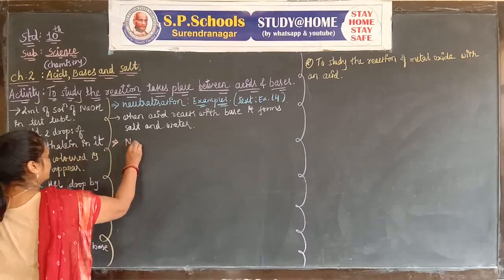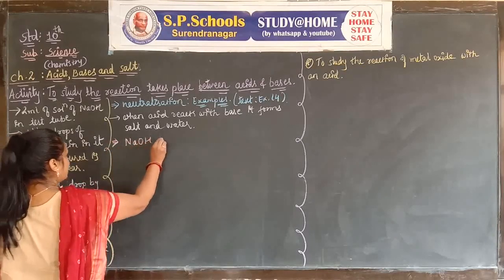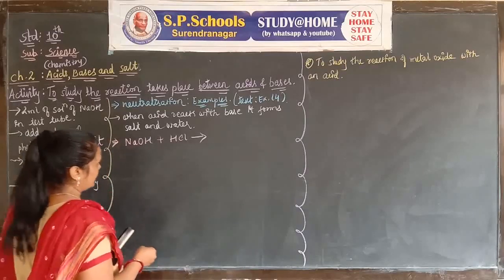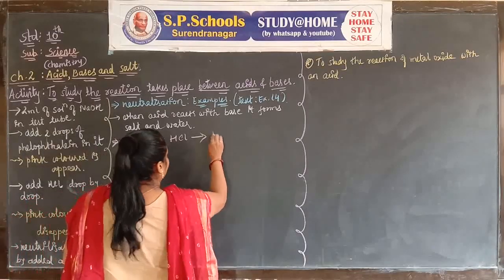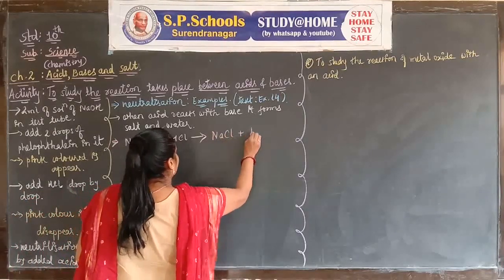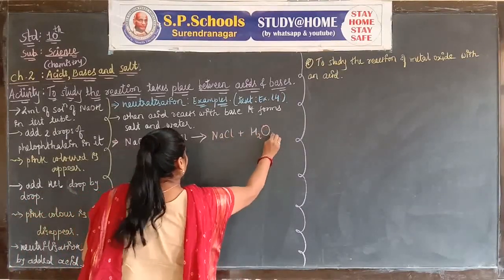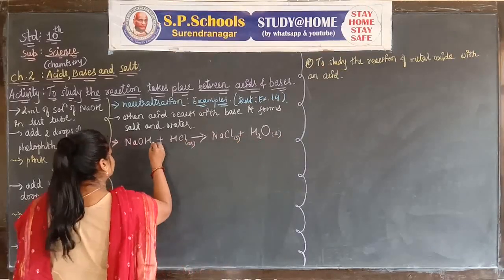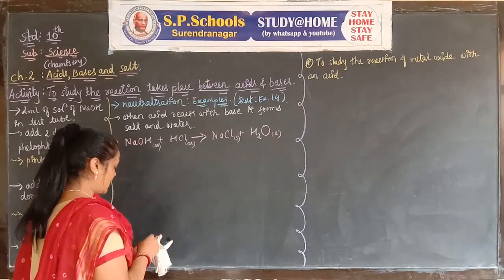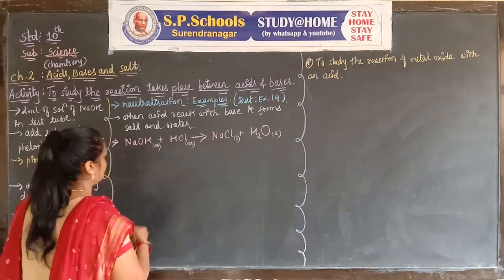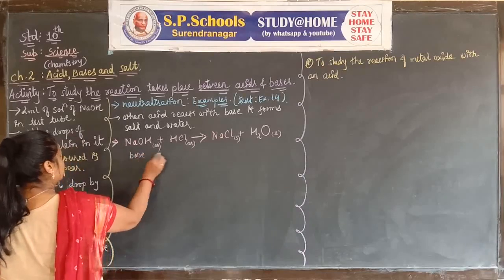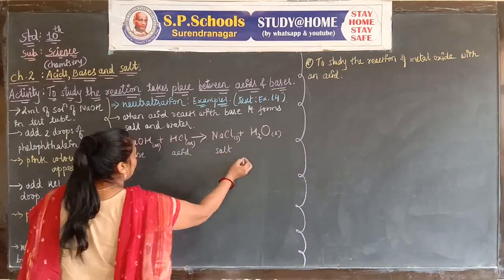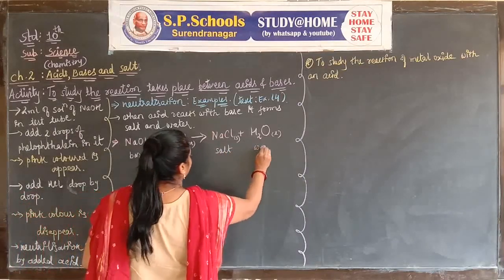Example equation: NaOH combined with HCl gives NaCl plus water. Here: base plus acid gives salt plus water.